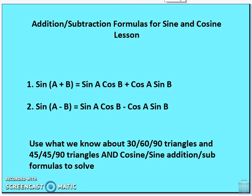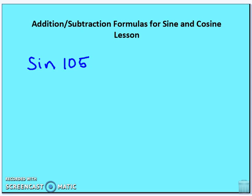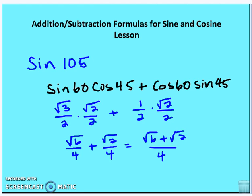Let's find sine 105°. You should get sine(60° + 45°) = sine 60° · cosine 45° + cosine 60° · sine 45°, which evaluates to (√6 + √2)/4.